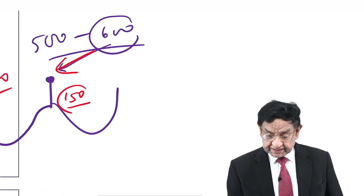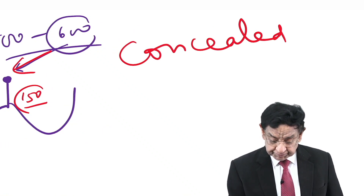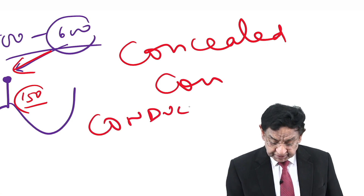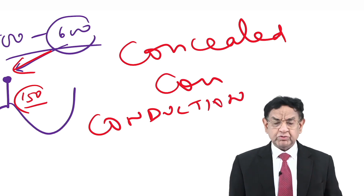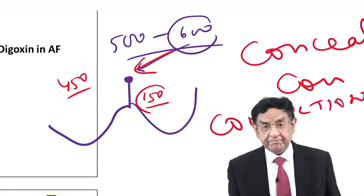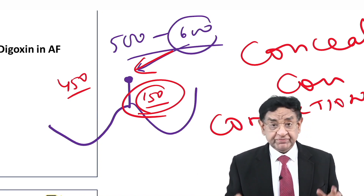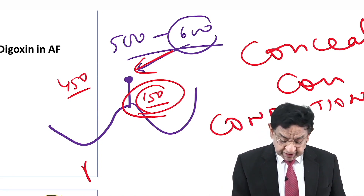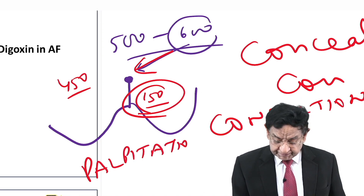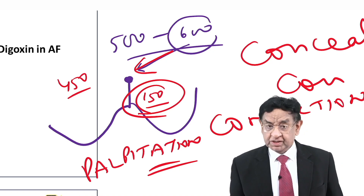Only 150 impulses can go down, and this is known as concealed conduction. Why can the AV node hold the impulses? Because it has a refractory period. Now 150 impulses are getting through, so the ventricular rate is 150 — which is very fast. That's why the patient will complain of palpitation, as in our patient who presented with sudden onset of palpitation due to a very rapid ventricular rate.